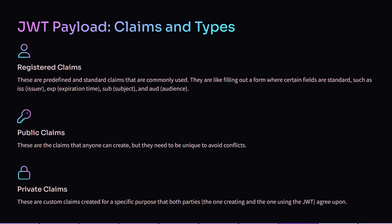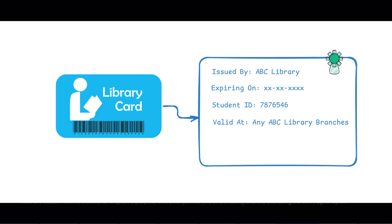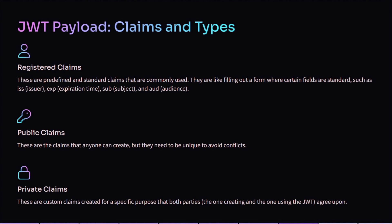There are three types of claims you can define. The first one is registered claims. These are predefined and standard claims that are commonly used — like filling out a form where certain fields are already standard, such as issuer, expiration time, subject, and audience. For example, imagine you get a library card equivalent to a JWT. The library card has issuer details telling us about the library that issued it, an expiration date when the card expires, a subject which is your name, and an audience which is the library where you can use the card.